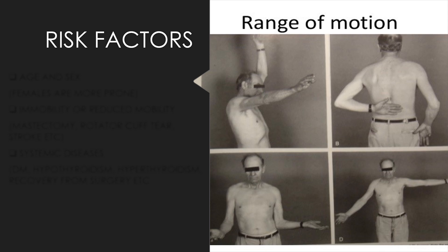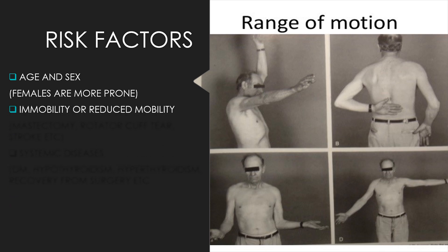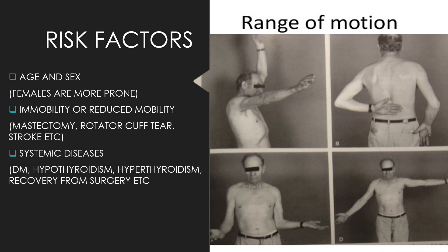There are three major risk factors: sex and age, immobility, and systemic disorders. Studies have proven that females are more prone to frozen shoulder, especially in their fourth decade. Longer periods of immobilization or decreased mobilization lead to a stiff and frozen shoulder. Systemic diseases such as diabetes and hyperthyroidism also contribute to the occurrence or worsening of frozen shoulder.